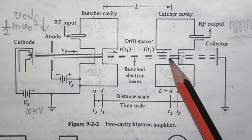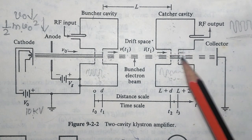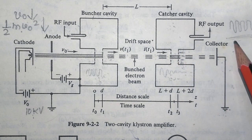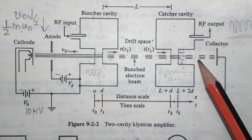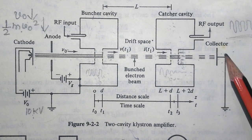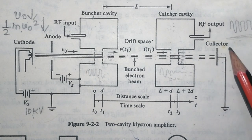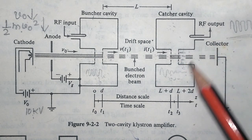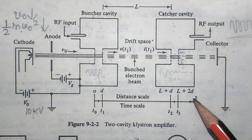After the electron bunches lose their energy at the catcher cavity, they travel to the collector, which is at a positive potential and accepts all the electron bunches. This is how the two-cavity klystron works as an amplifier.